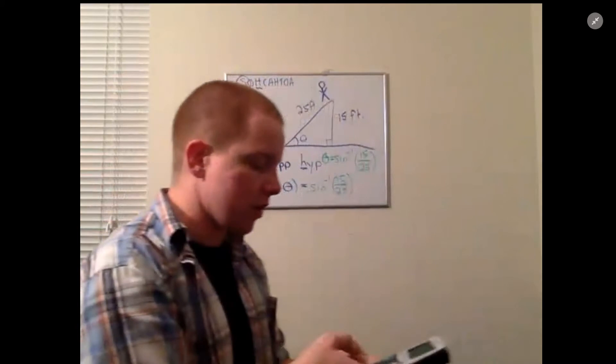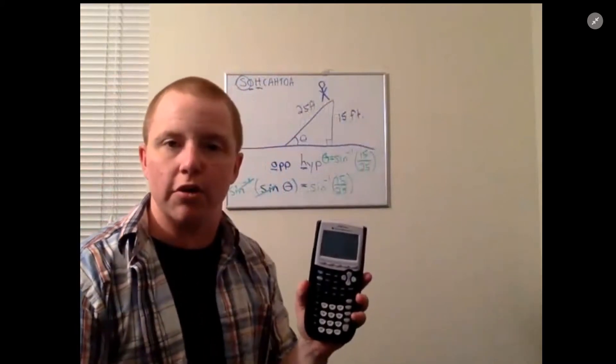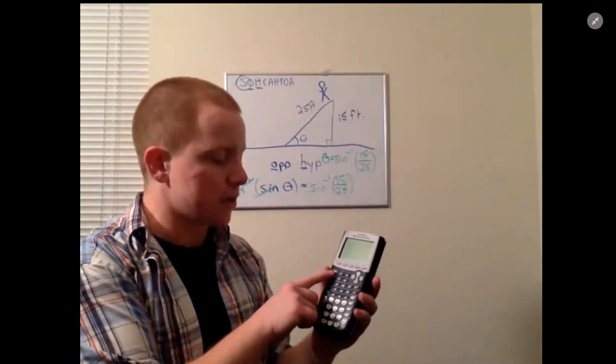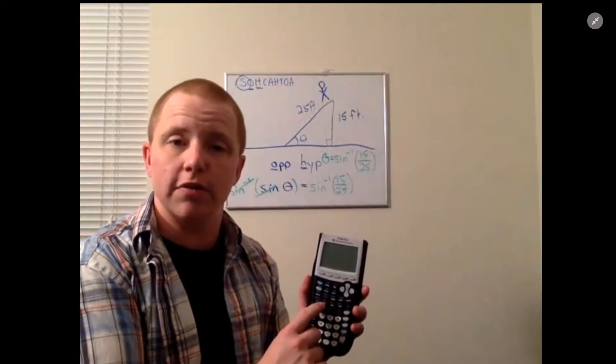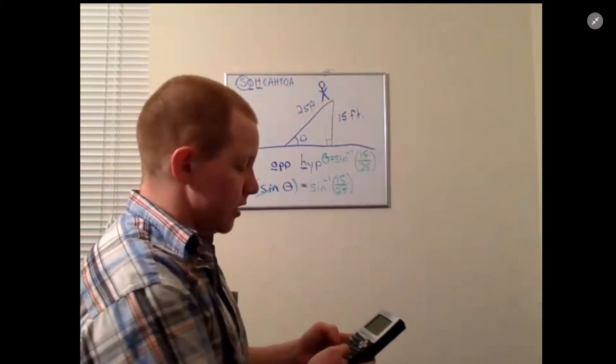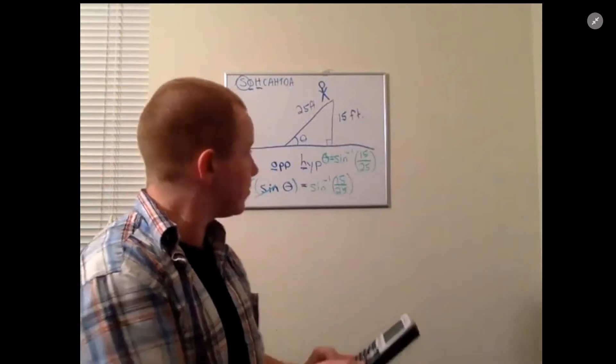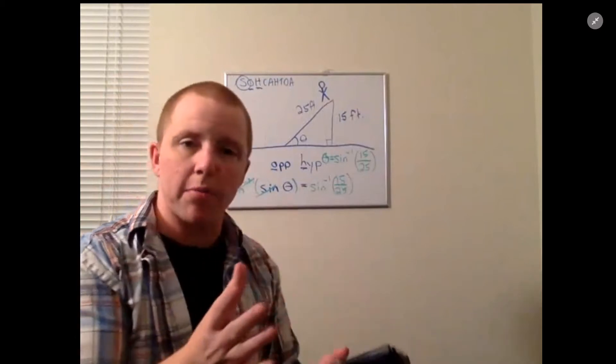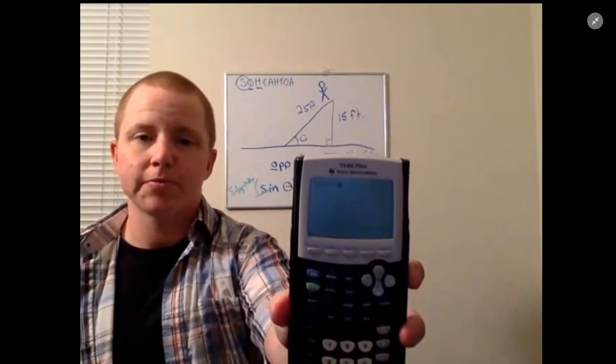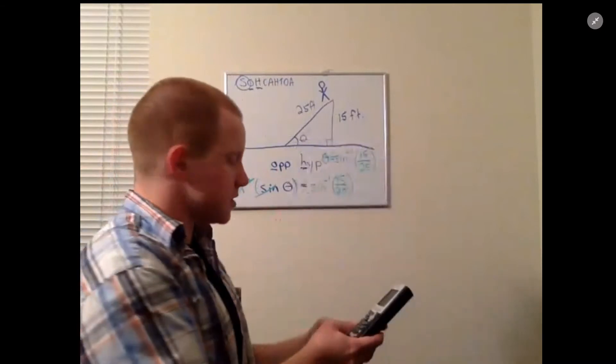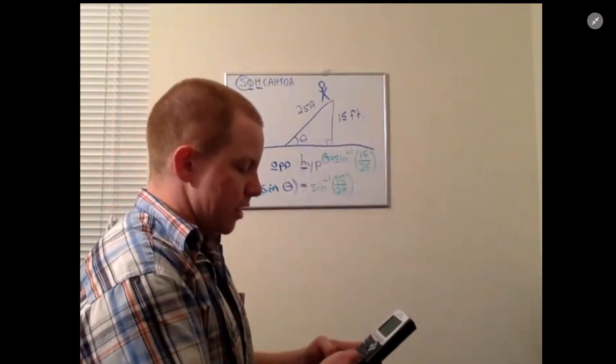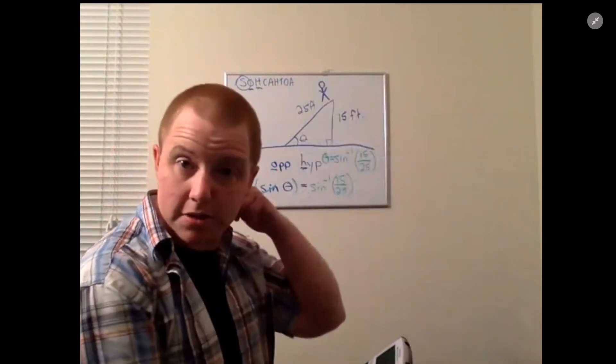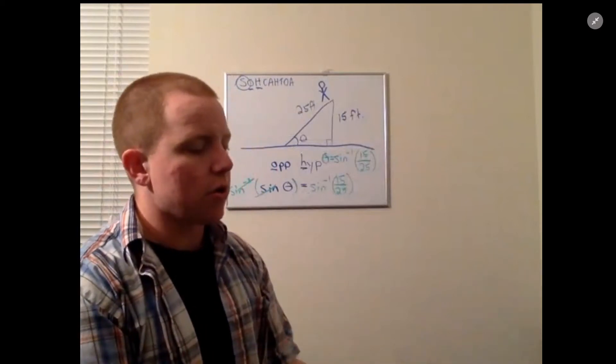You can just type that in your calculator. If you're using a graphing calculator, you can use the second function and then sine, and that'll give you the inverse sine. So I'm going to say second and then inverse sine, and it'll already pop up a parentheses for you. Then you just say 15 divided by 25 and close your parentheses.